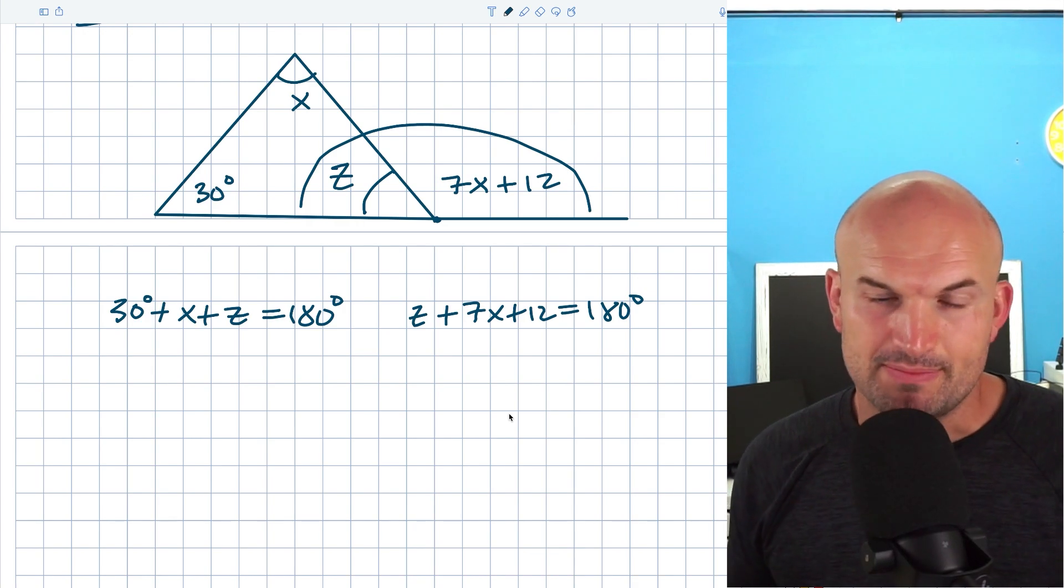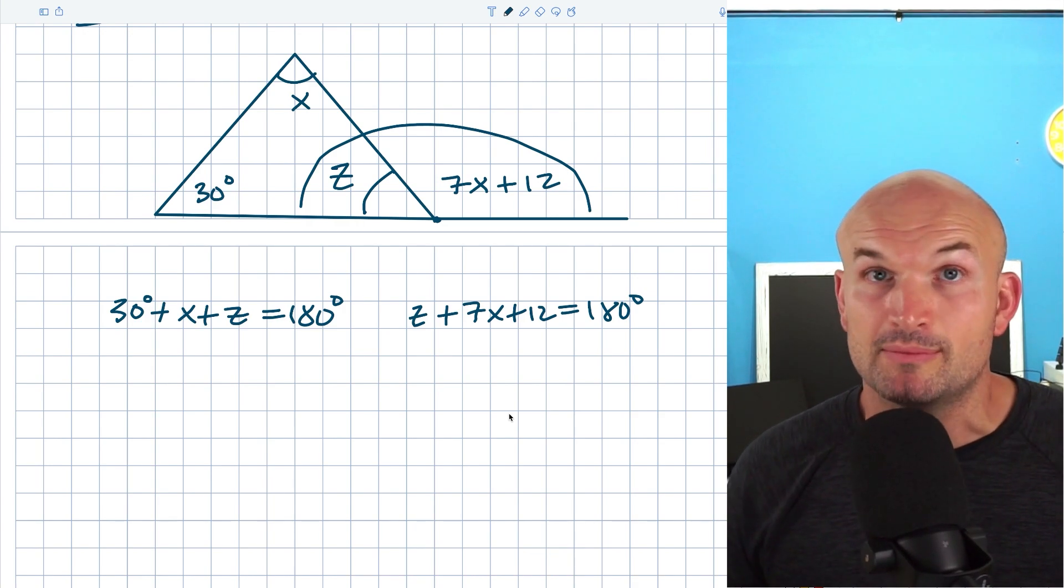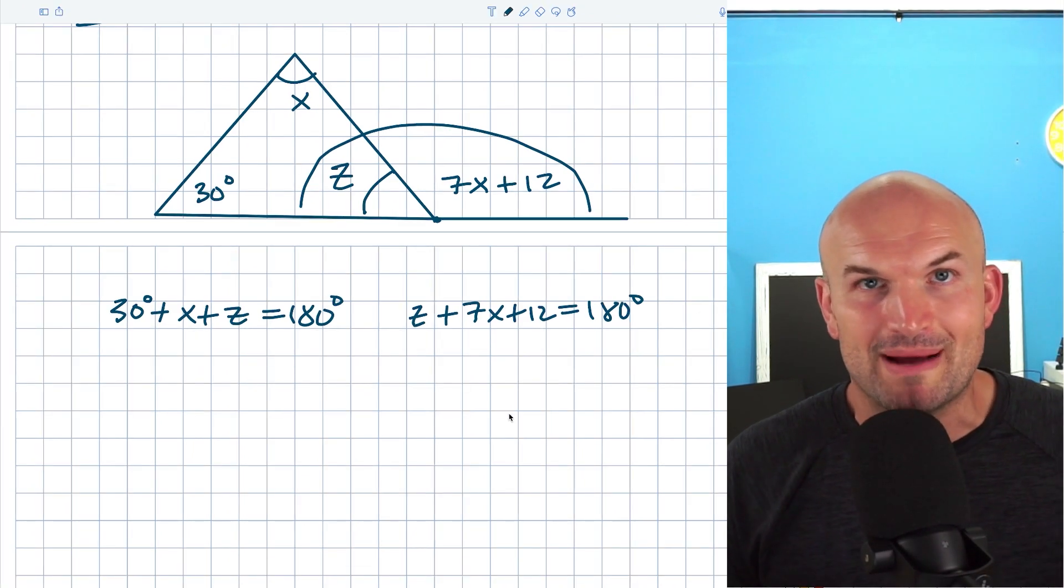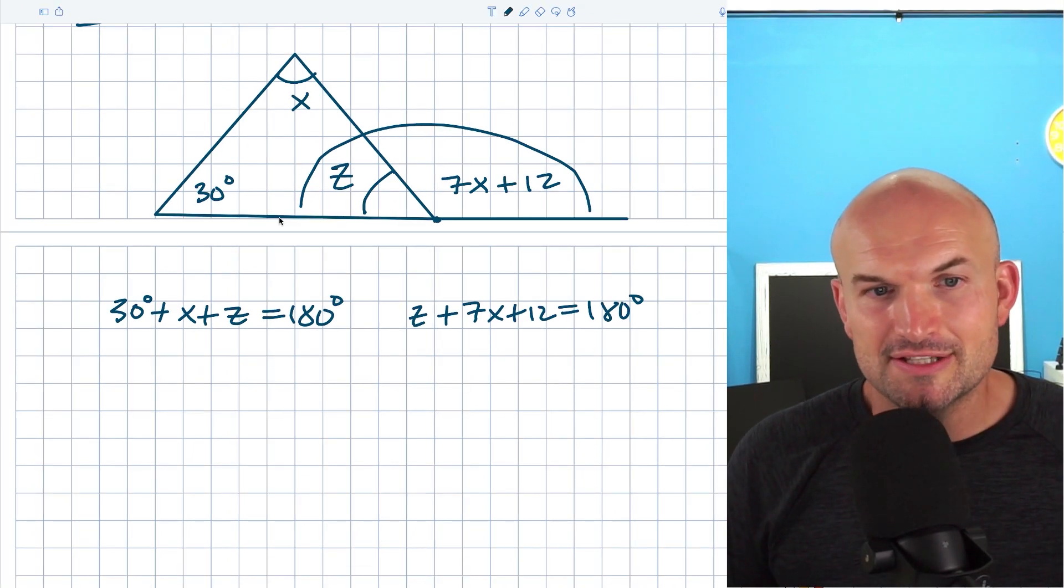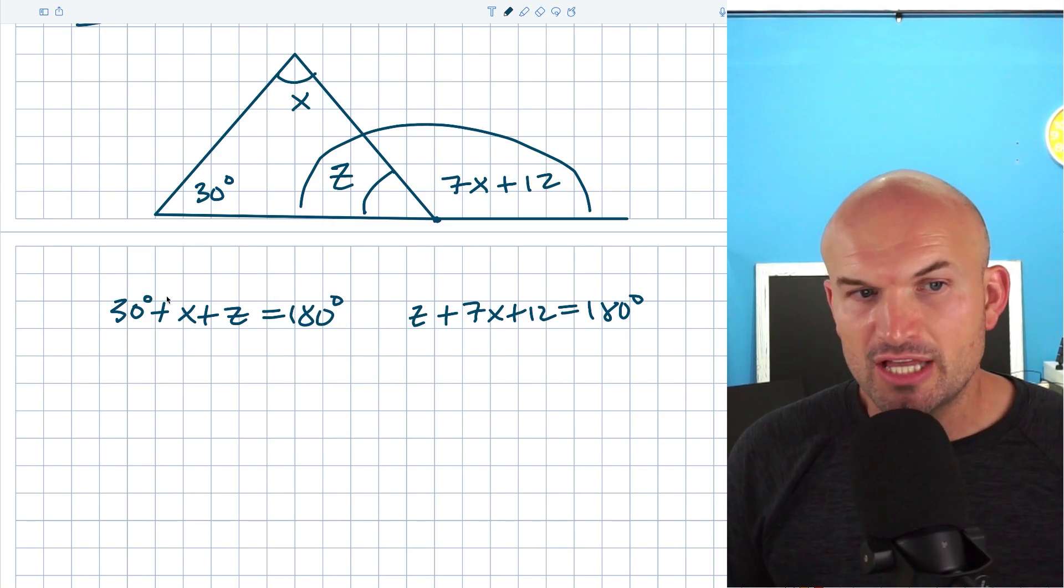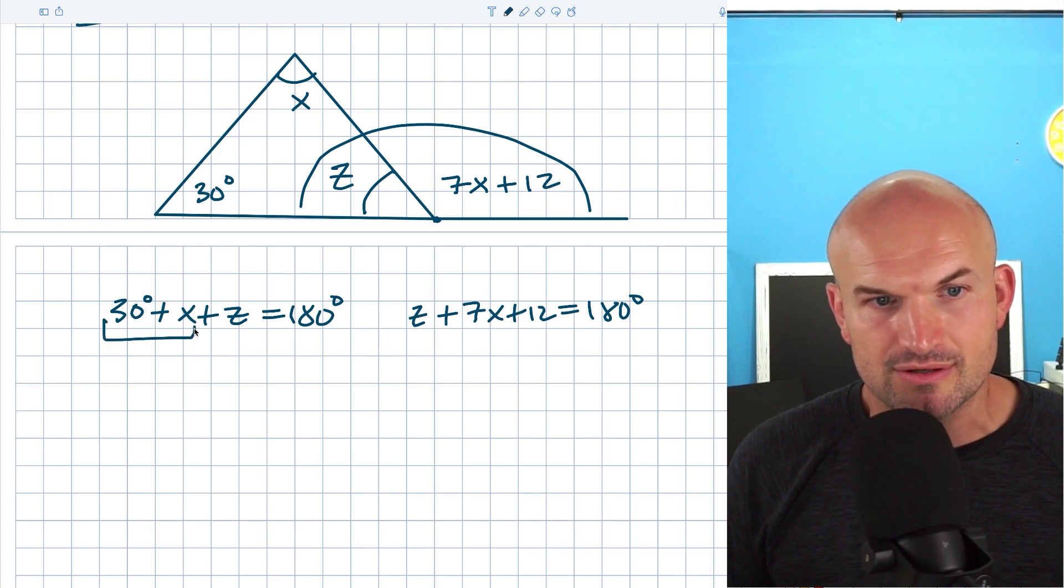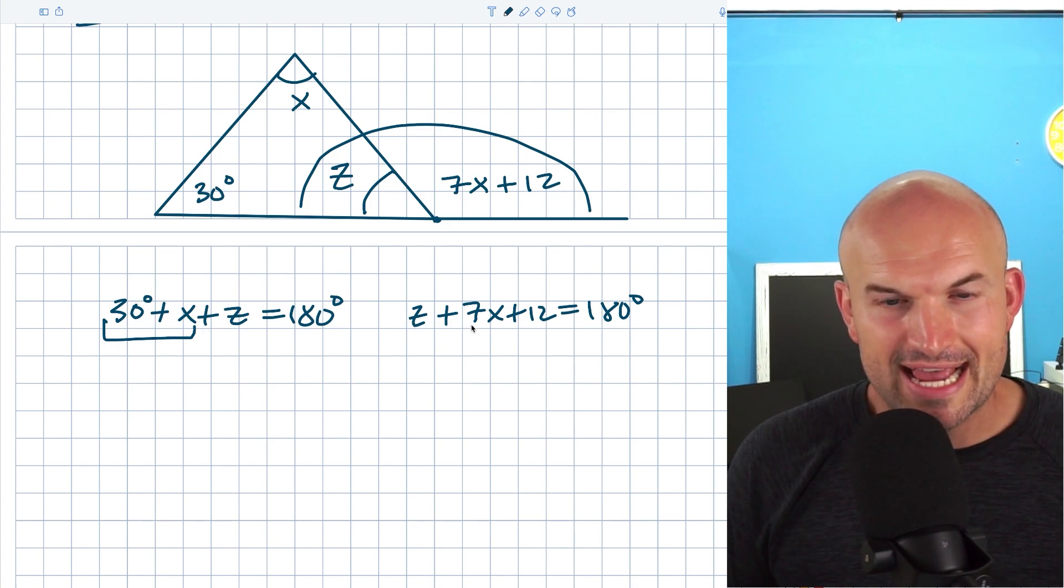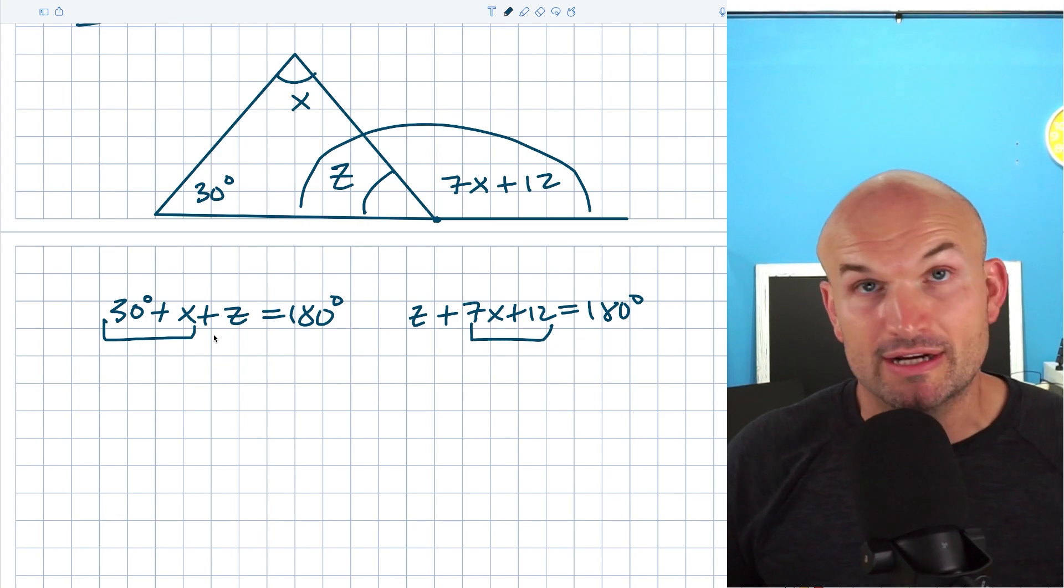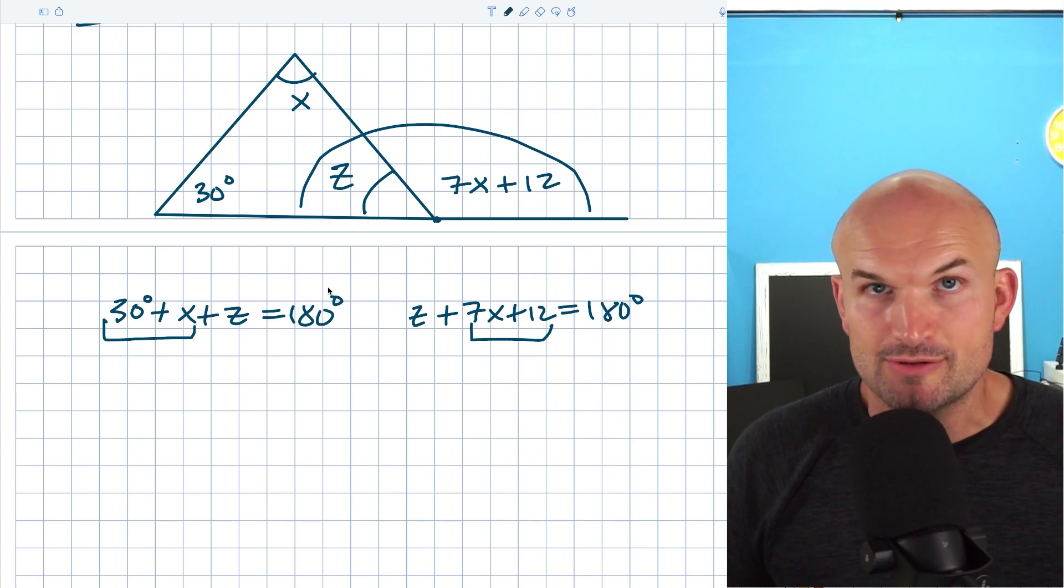There's a couple of different ways we could solve this because basically we have two equations with two variables. We could use our understanding of systems of equations to solve this, but I don't want to go back to a heavy algebraic method. Since they're both equal to 180 degrees, you could set both equations equal to each other. Another way to look at this is these two angles plus Z equals 180, this angle plus Z equals 180. So if both of these angles plus Z are equal to 180, then those two angles are going to be equal to each other.